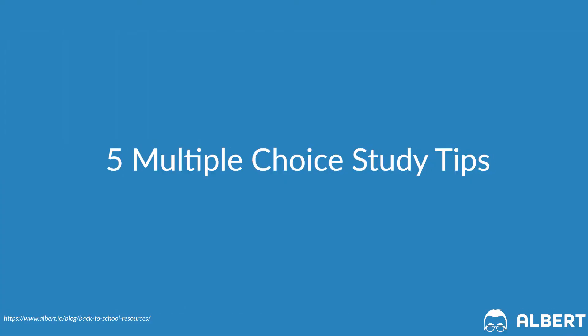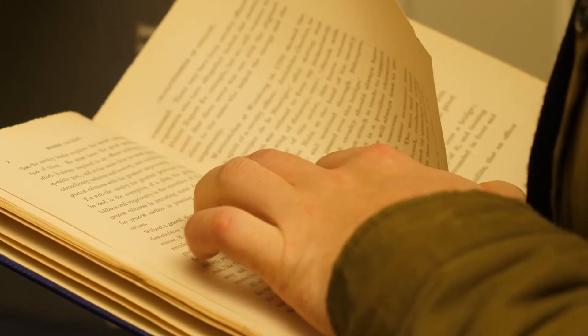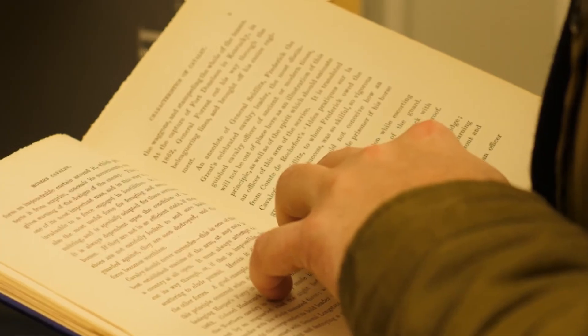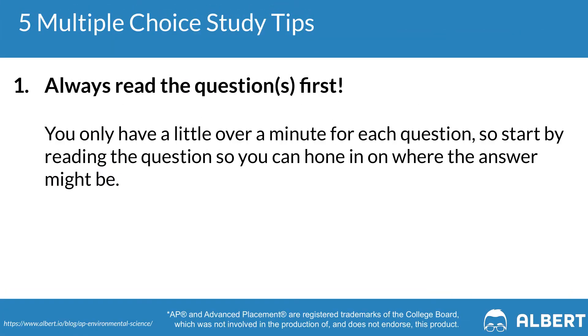Now that we've tackled some general AP environmental science tips, let's jump into multiple choice tips. The first tip is to always fully read the question before responding. It can be easy to get distracted by diagrams, data presentations, or text and not focus on the actual question being asked. You have just over a minute per question, so hone in on what's being asked.